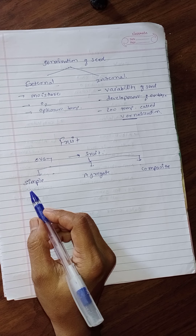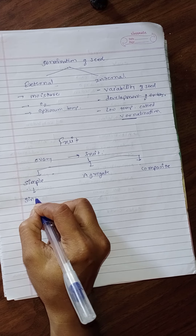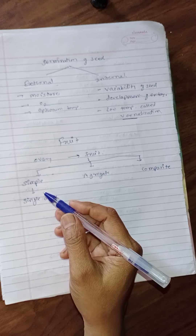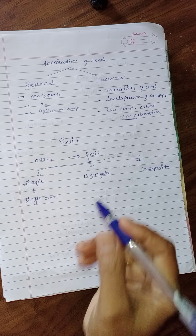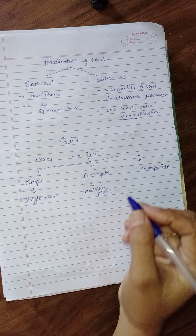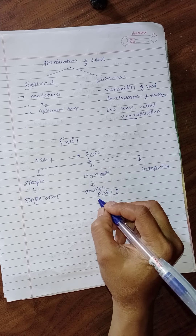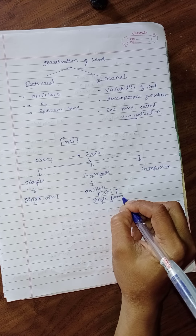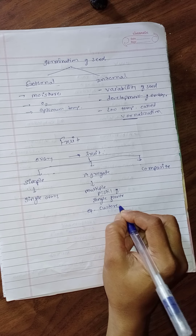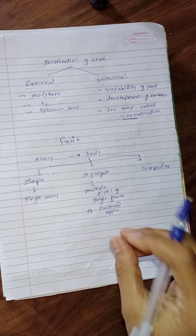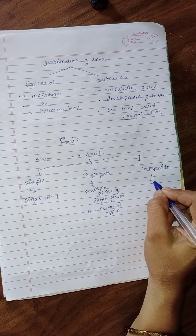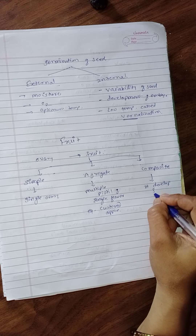Simple fruit: if a fruit develops from a single ovary, it is called a simple fruit. Aggregate fruit: if a fruit develops from multiple pistils of a single flower, it is known as aggregate fruit. Example is custard apple — many seeds in a single fruit.